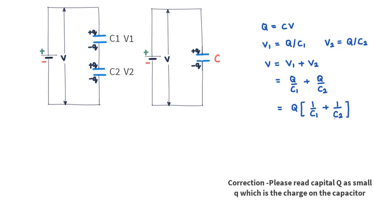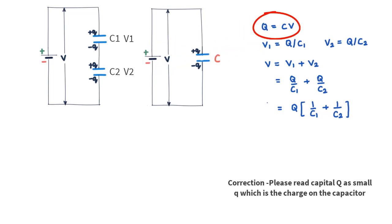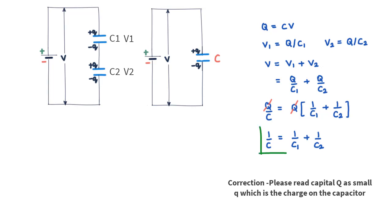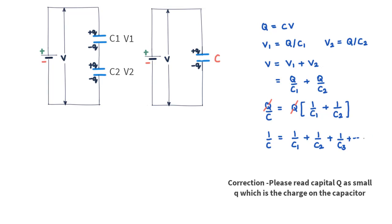Going back to our question — is there a capacitor that can replace the set of two? Yes, there is a capacitor with value C, and its potential difference would be V, so Q = CV, or V = Q/C. Substituting on the left-hand side, we find Q/C = Q·(1/C1 + 1/C2), which gives 1/C = 1/C1 + 1/C2. We can extend the same logic to N capacitors in series: 1/C = 1/C1 + 1/C2 + 1/C3 + ... + 1/Cn.